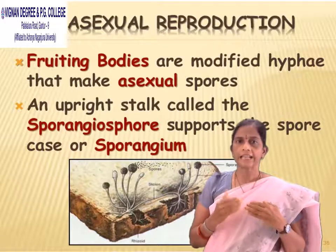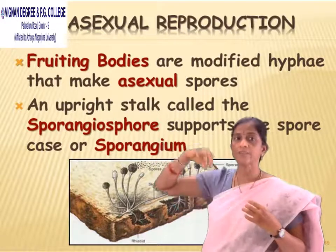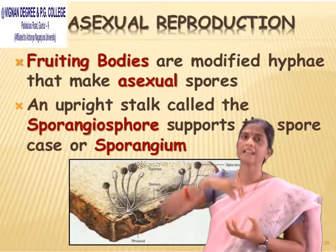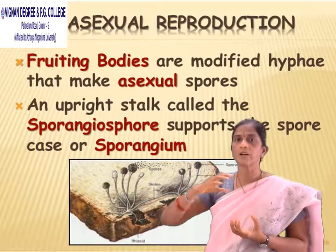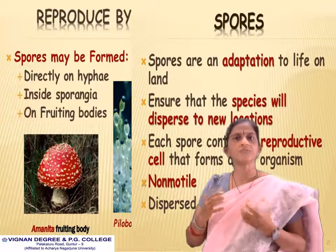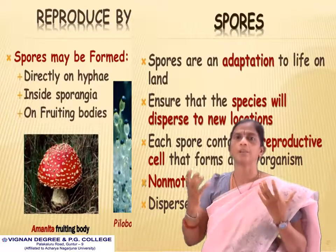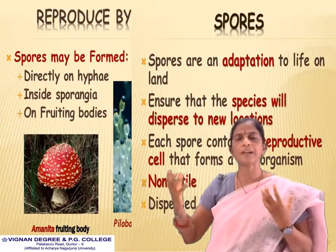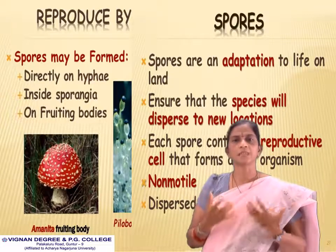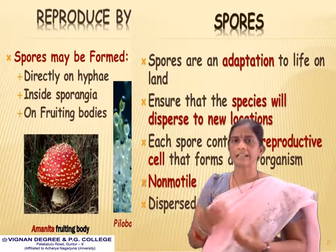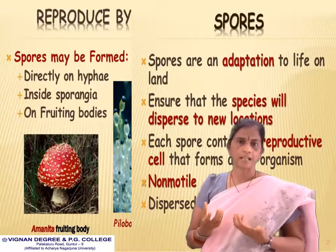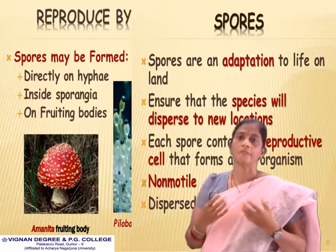Spores are formed directly on the hyphae, inside the sporangia, or on the fruiting body. Spores are an adaptation to life on land — they ensure the species will disperse to new locations, spread through the air. Each spore contains a reproductive cell that forms a new organism and can be dispersed by wind.